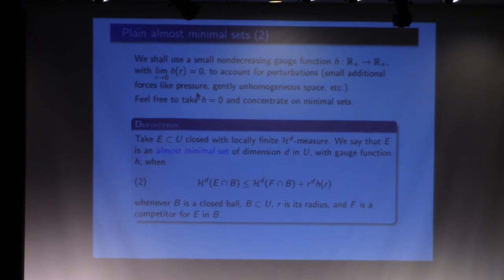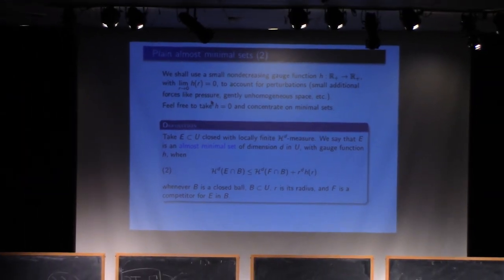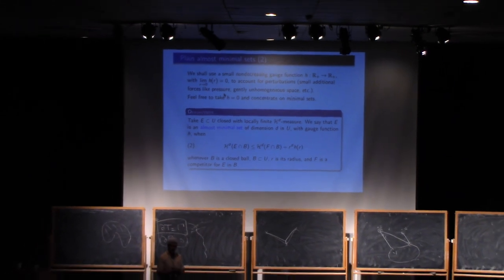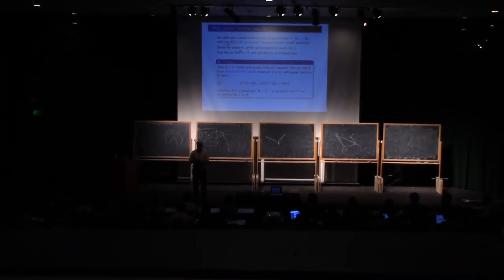Think about it as some sort of Dirichlet condition given by the set itself. The set maybe goes to infinity, but whenever I pick a ball, I cannot improve inside, given the boundary values there. I tried to play the watch as long as I could, but it's a good time to stop. Thank you.